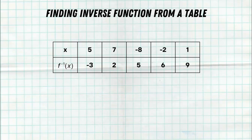So we're going to take the outputs, switch them with the inputs, and then the inputs become our outputs. Here is that table — look how easy that is. Don't forget the big thing I did was identify this as the inverse function. So all of the inputs — negative three, two, five, seven, six, and nine — are now my outputs, but that's only true if I'm using the inverse function. Do not forget to label this with that f raised to negative one, indicating we have an inverse function. That's how easy it is to find an inverse function from a table.